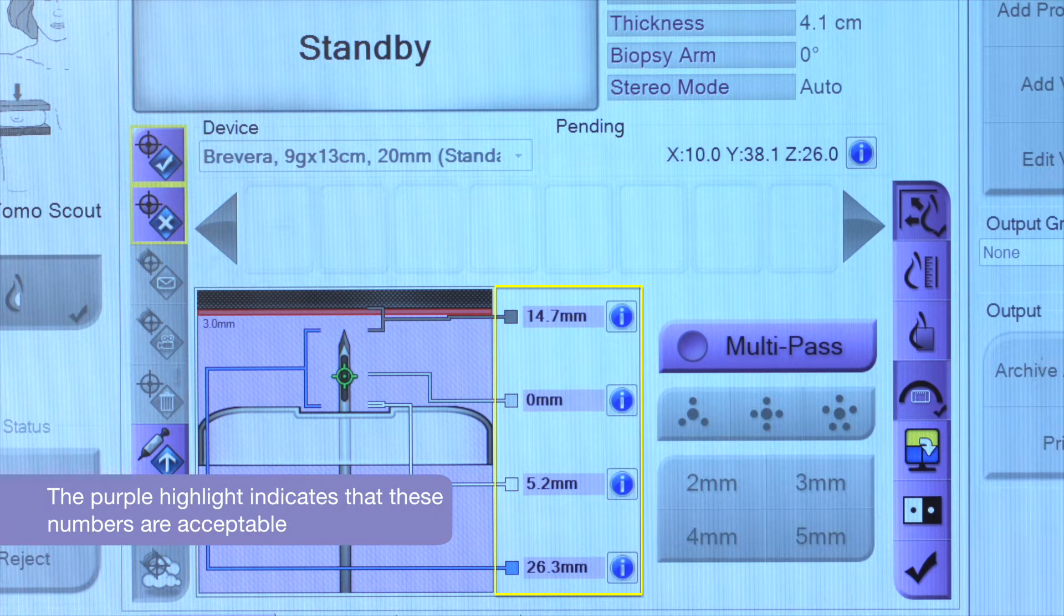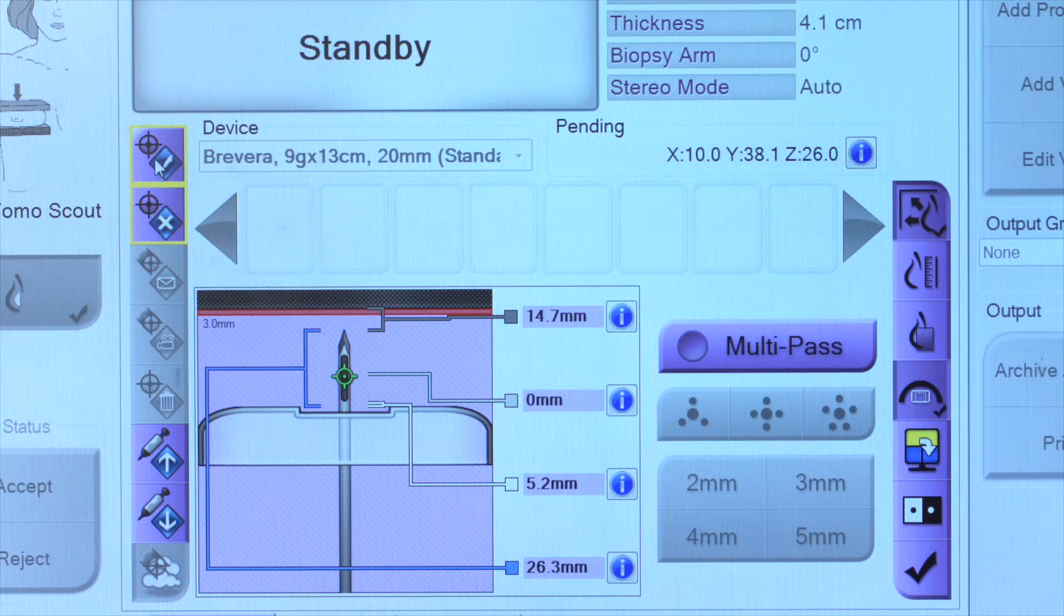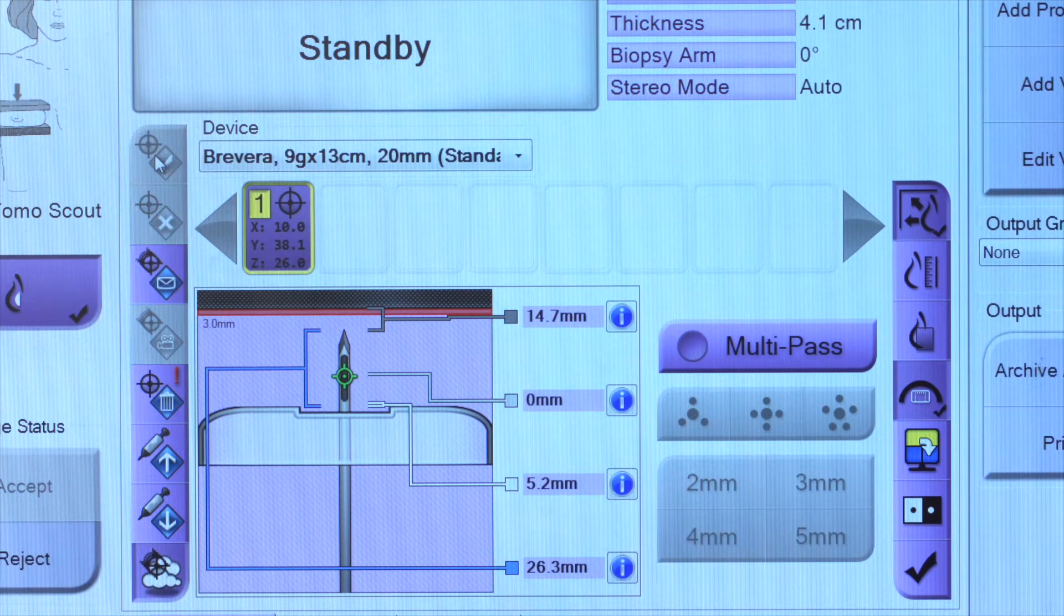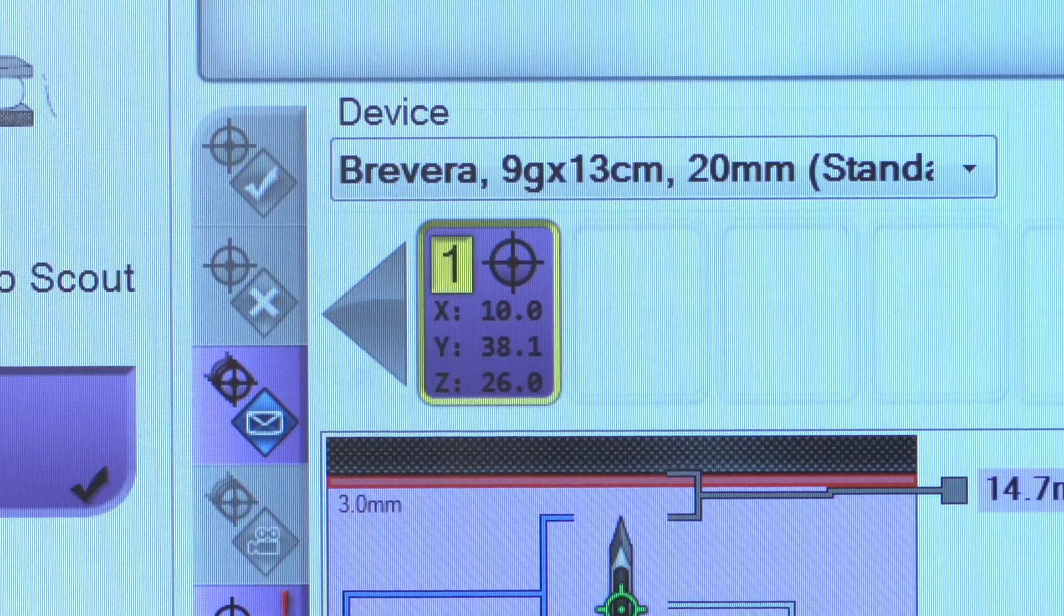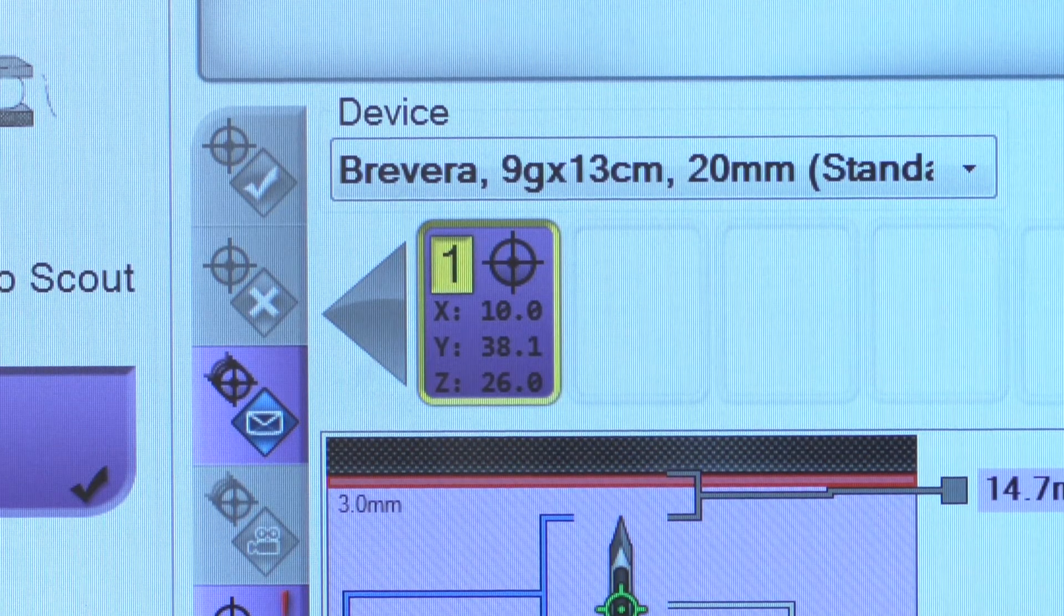Once the physician confirms that the target is viable, they will transmit the coordinates to the biopsy control module, or BCM, on the table. Once transmitted, the target numbers and needle selection on the AWS should match with the BCM.